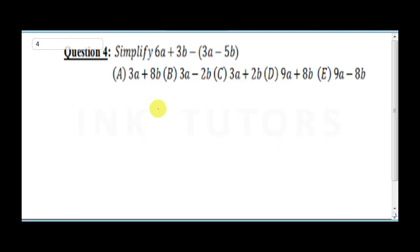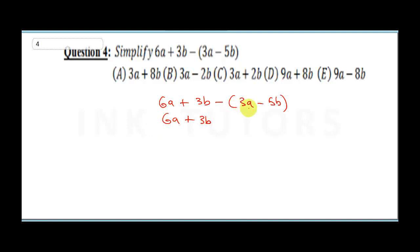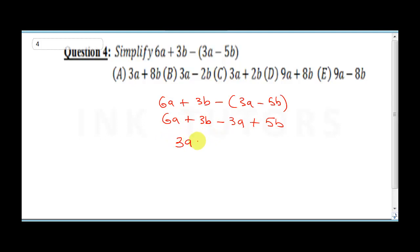Question 4 says simplify 6a plus 3b minus (3a minus 5b). First, open the bracket: minus times 3a gives minus 3a, and minus times minus 5b gives plus 5b — always remember your sign rules. Now collect like terms: 6a minus 3a is 3a, and 3b plus 5b is 8b. The final answer is 3a plus 8b, so the answer is A.